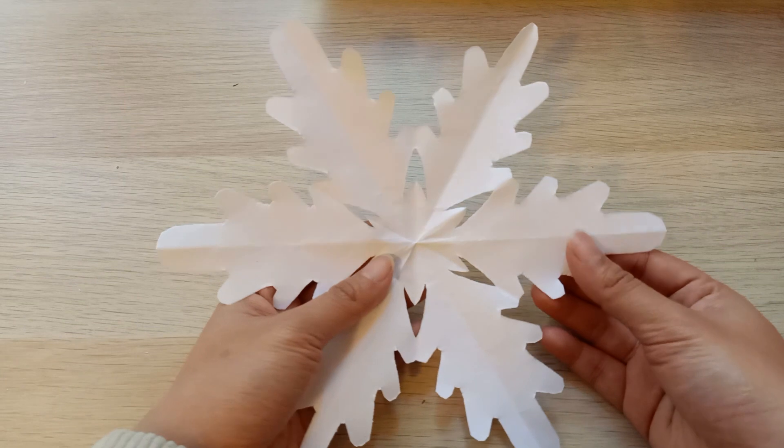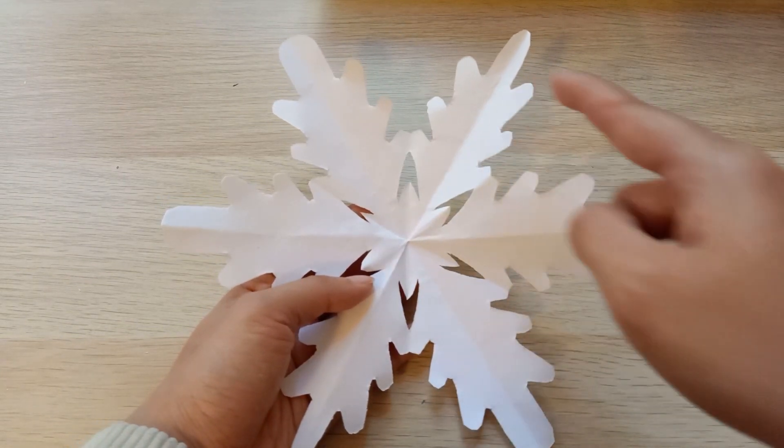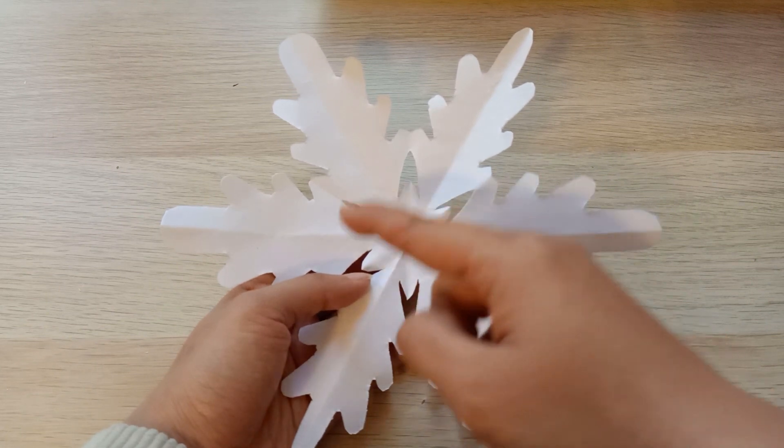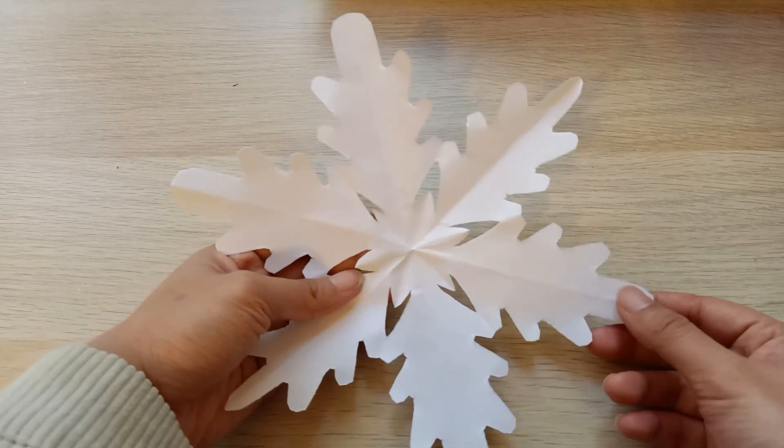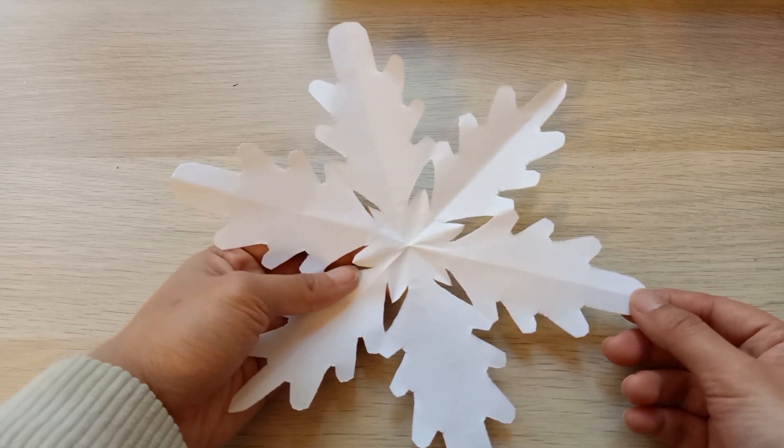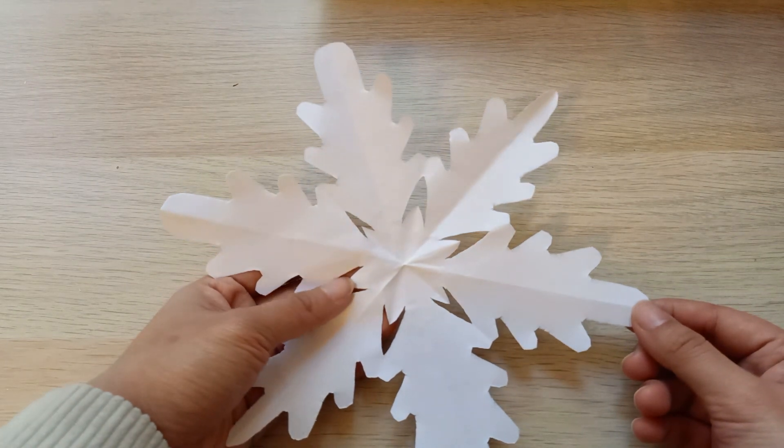And as you can see, our paper snowflake has six branches: one, two, three, four, five, six. I think this could be a stellar snowflake. Maybe a stellar dendrite, or maybe more specifically, a fern-like stellar dendrite.